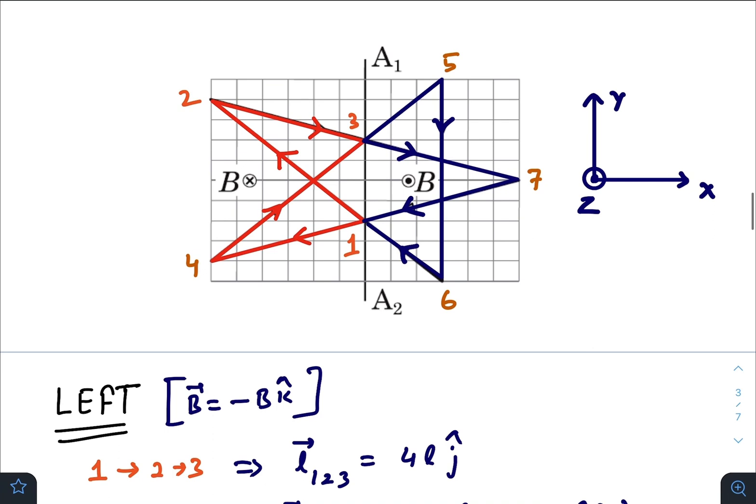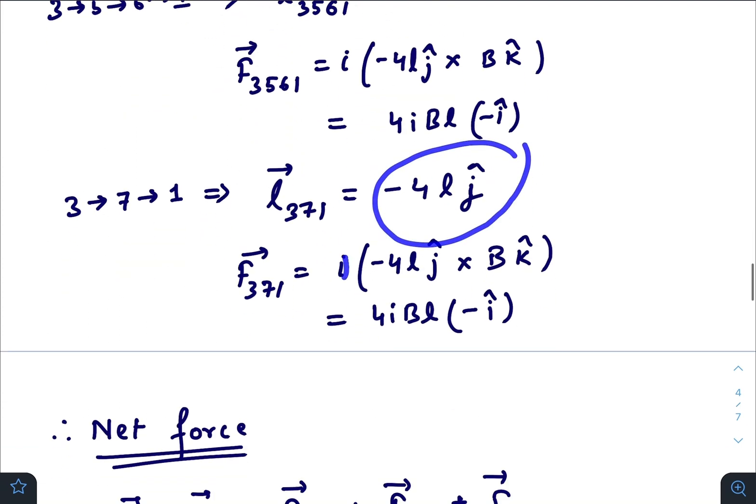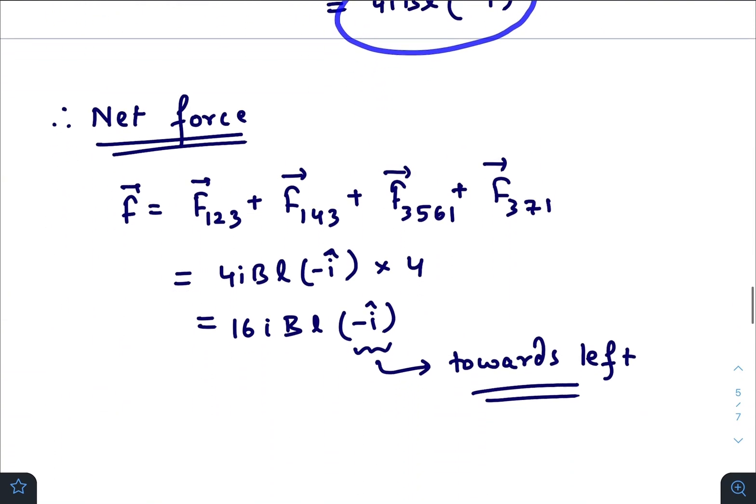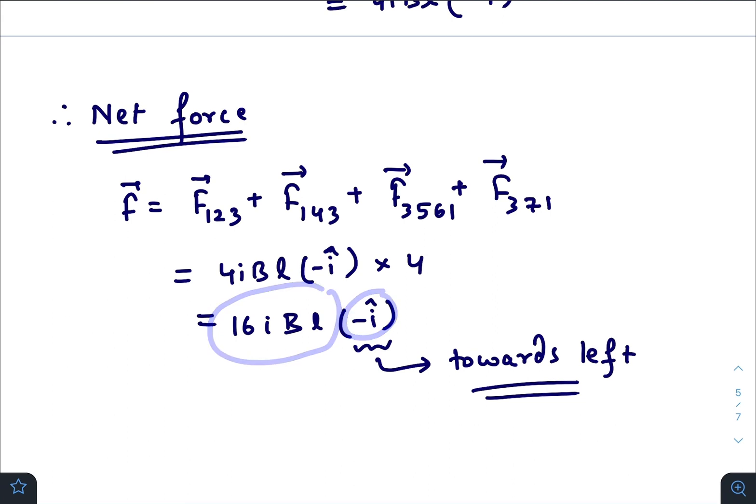Just add these four forces to get the net force: 16iBl(−î). The −î represents that the net force is towards the left.